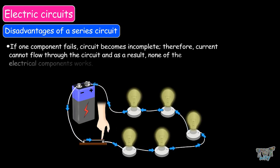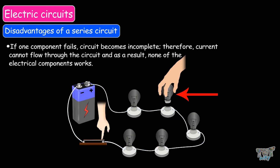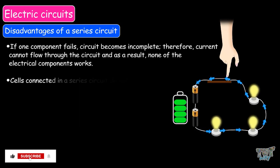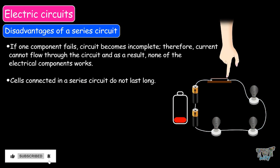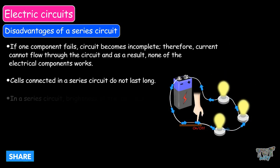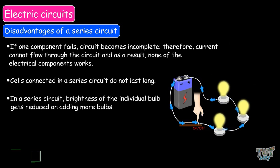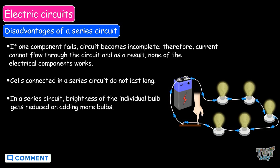Now let us learn about the disadvantages. If one component fails, the circuit becomes incomplete, therefore the current cannot flow through the circuit, and as a result none of the components work. Cells connected in a series circuit do not last long. In a series circuit, the brightness of the individual bulb gets reduced upon adding more bulbs.